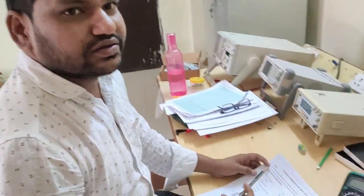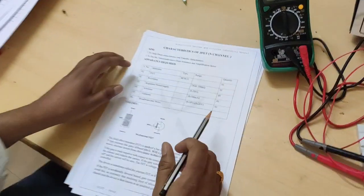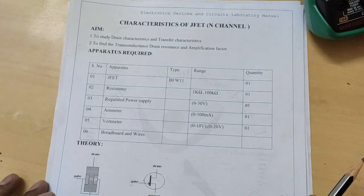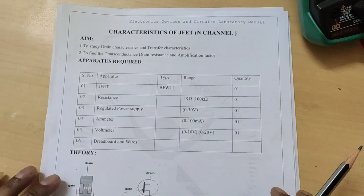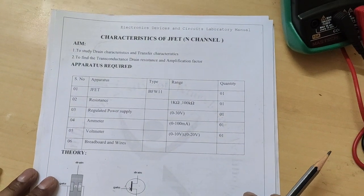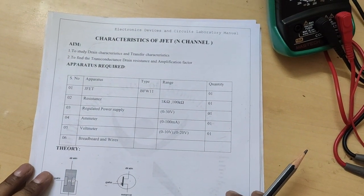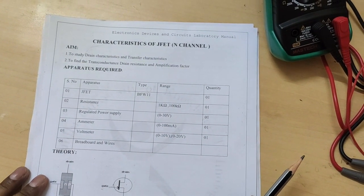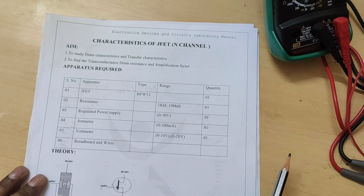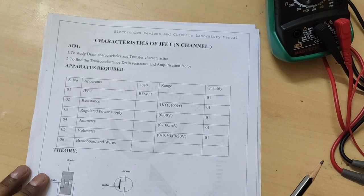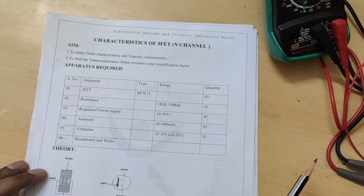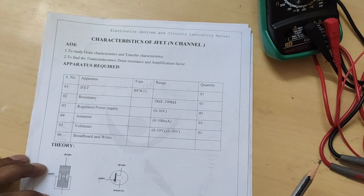Hi students, today's experiment is characteristics of JFET. The aim of the experiment is to study drain characteristics and transfer characteristics, and to find the transconductance, drain resistance, and amplification factor.